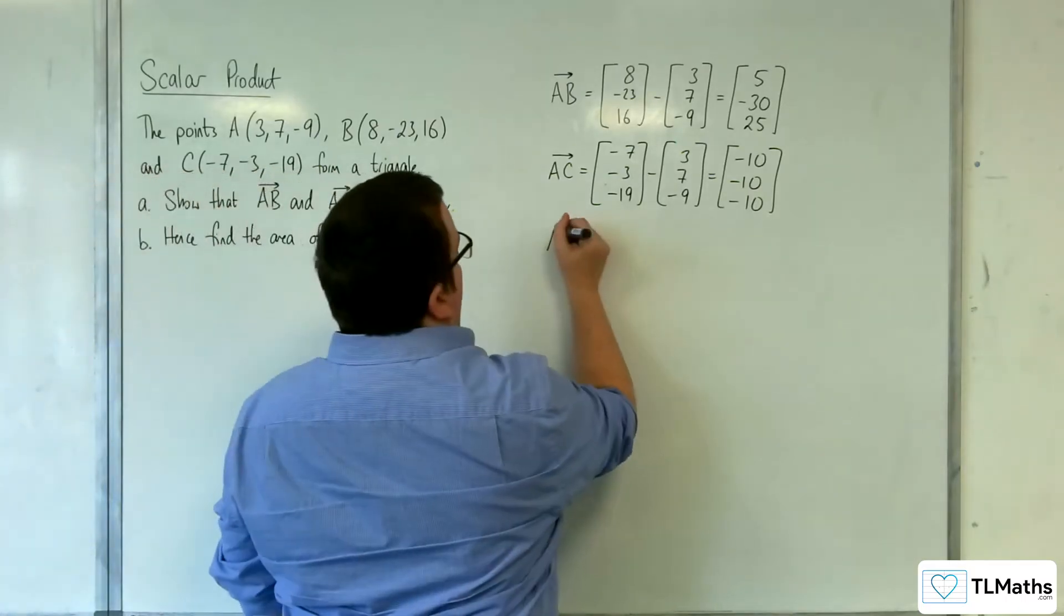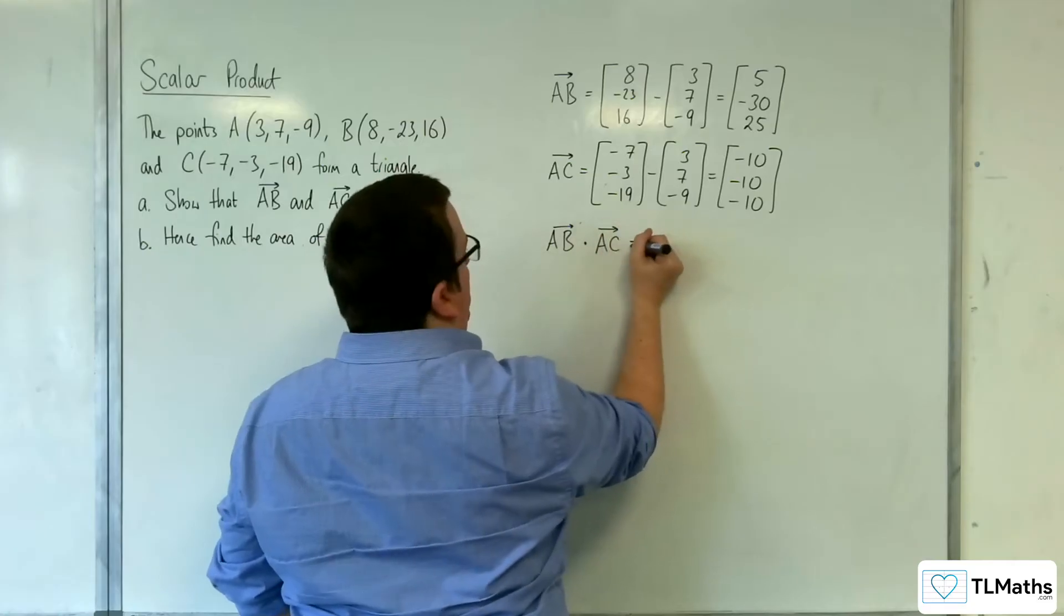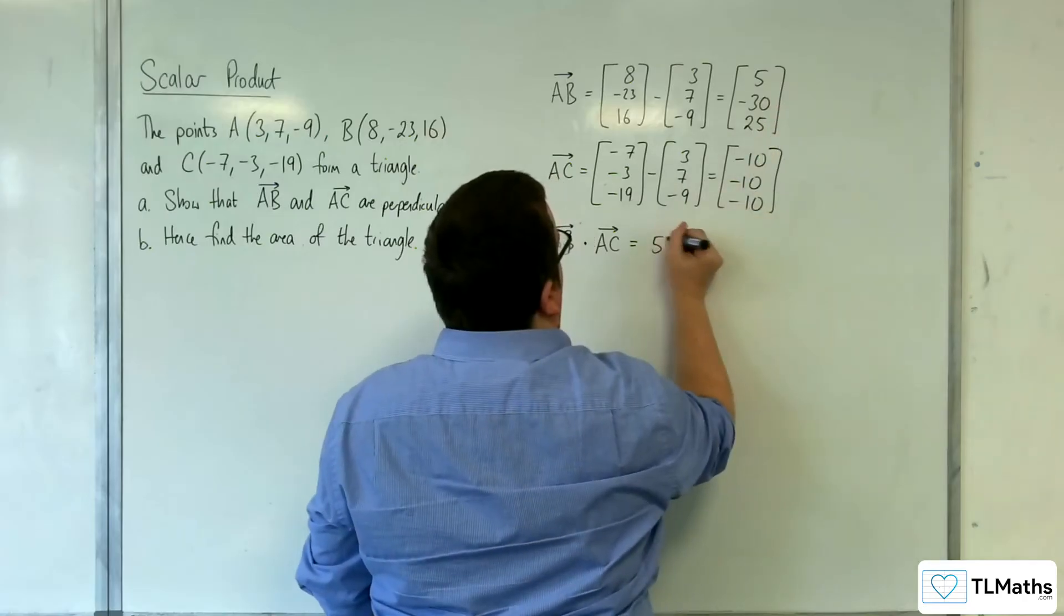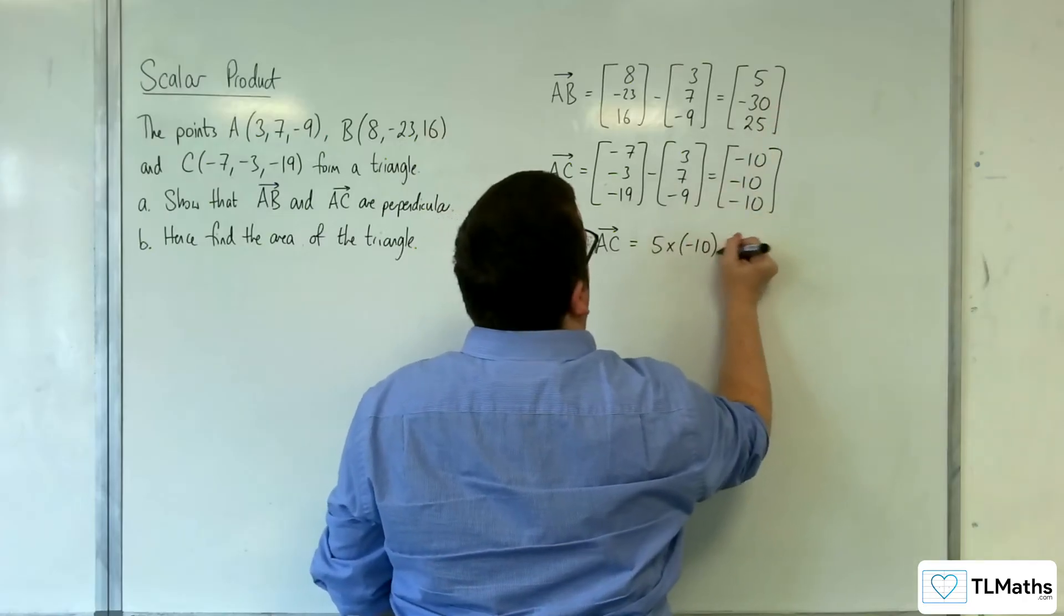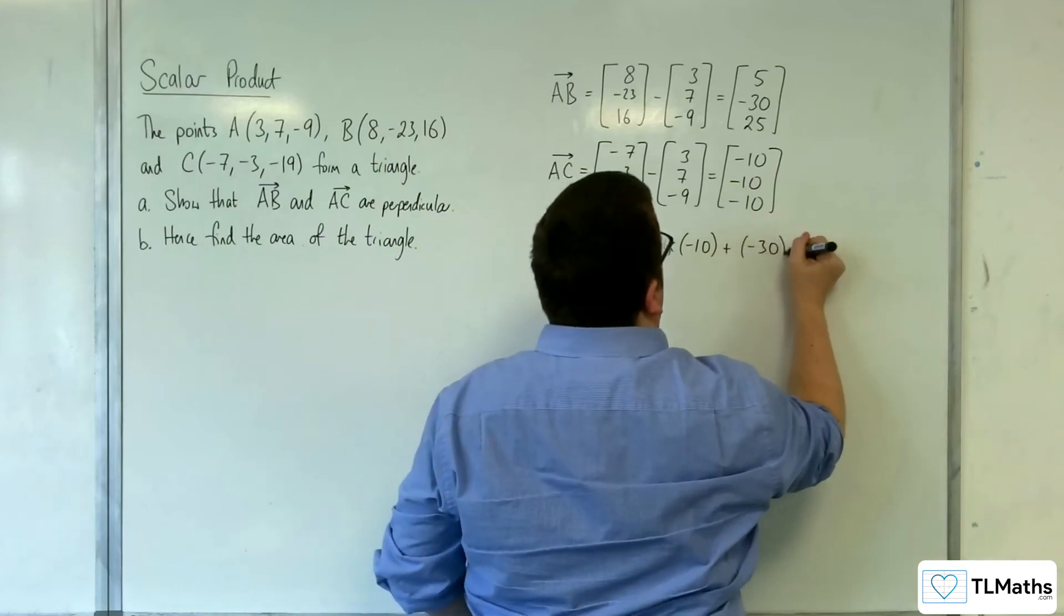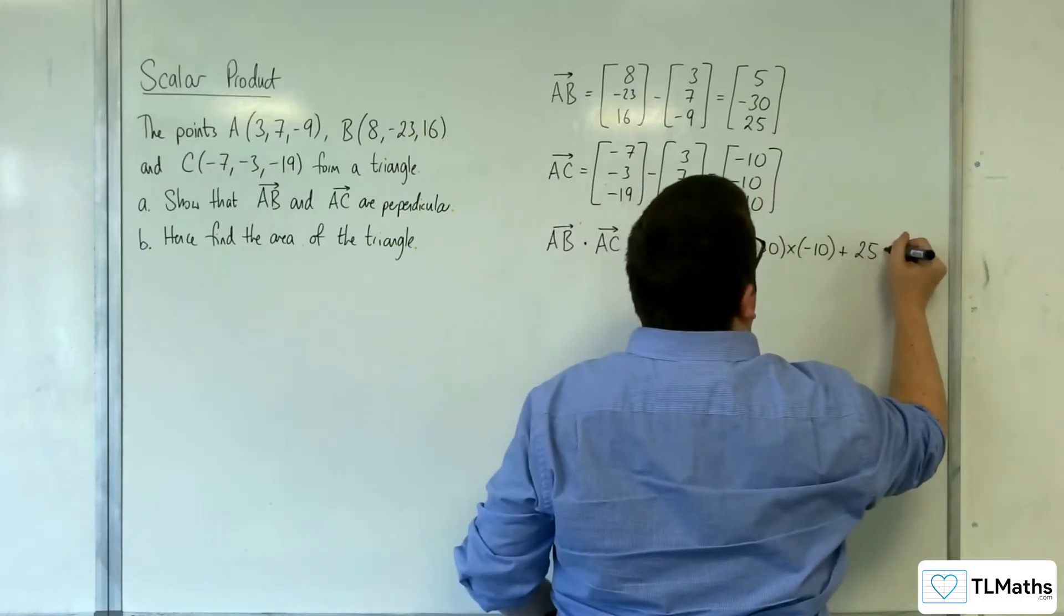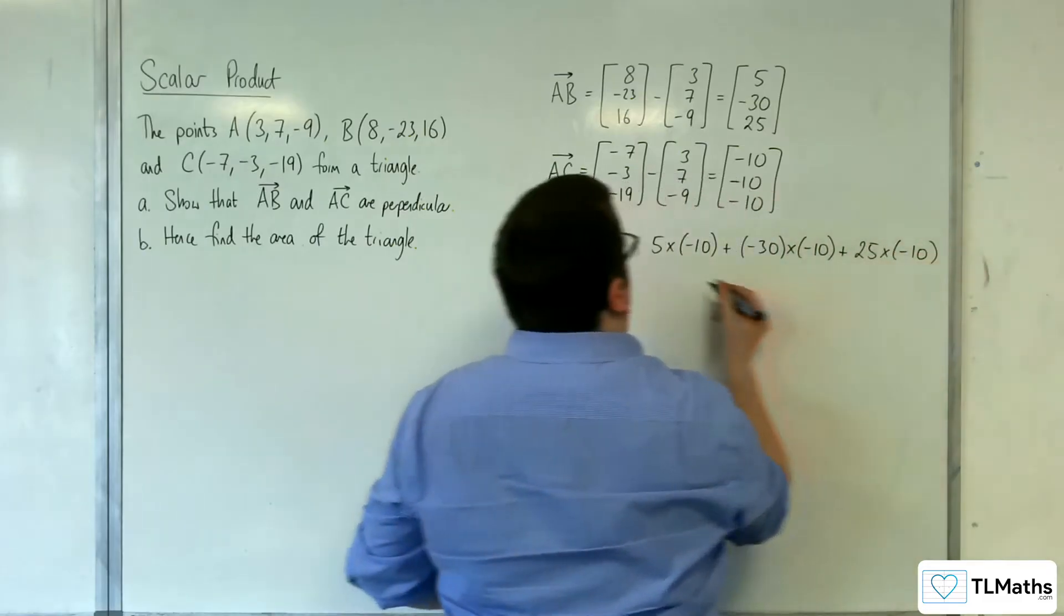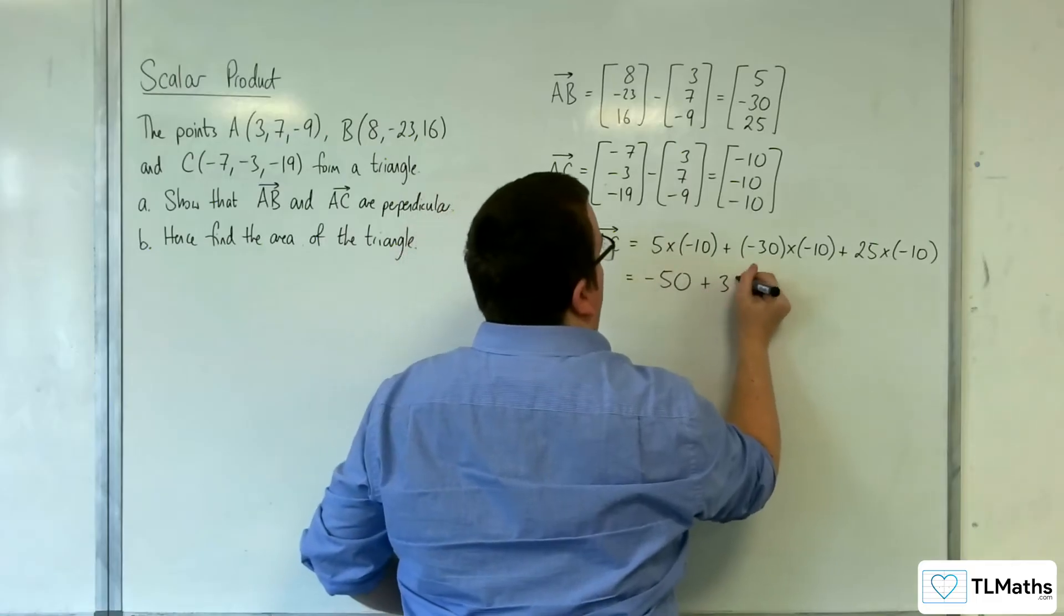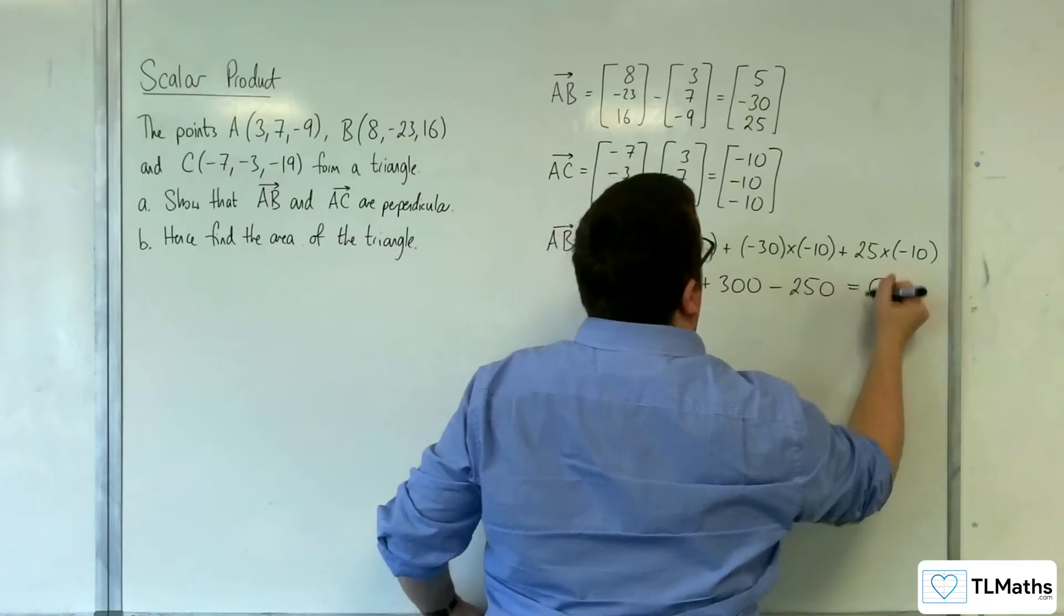So then we want to do AB dotted with AC. Now if this is equal to 0, then they're perpendicular. We have 5 times minus 10, plus minus 30 times minus 10, plus 25 times minus 10. So we have minus 50, plus 300, take away 250, and that's equal to 0.